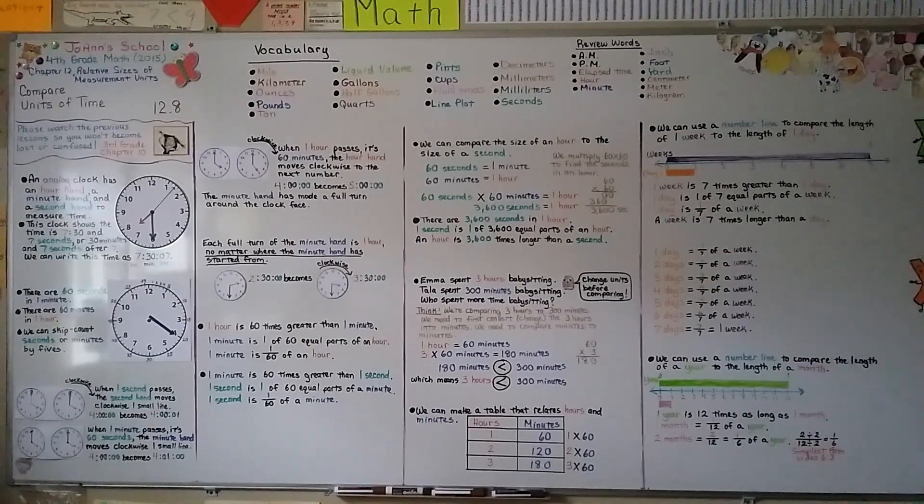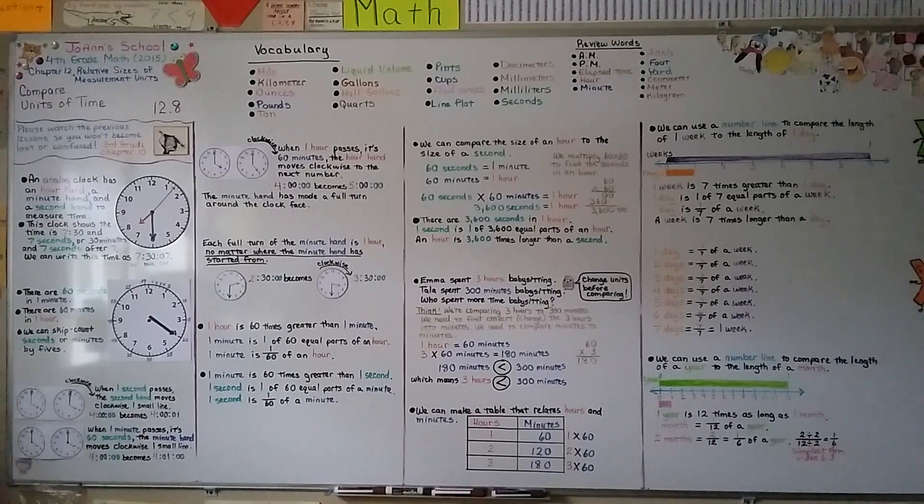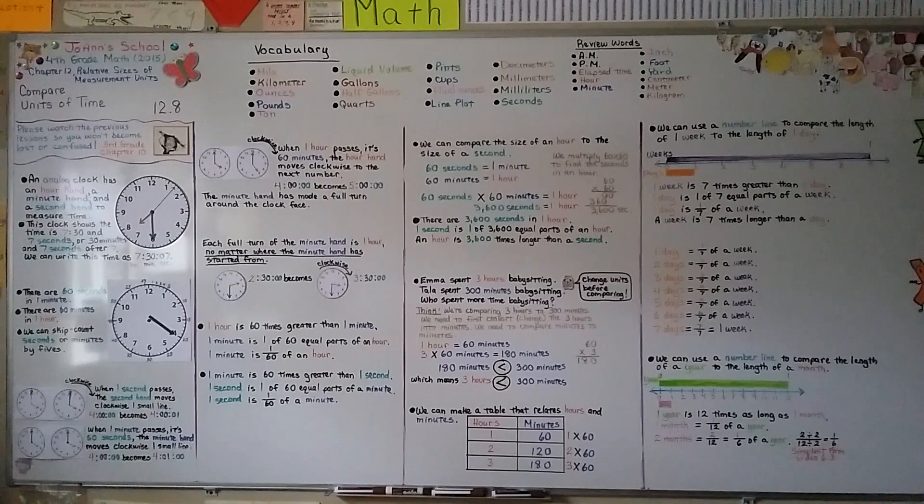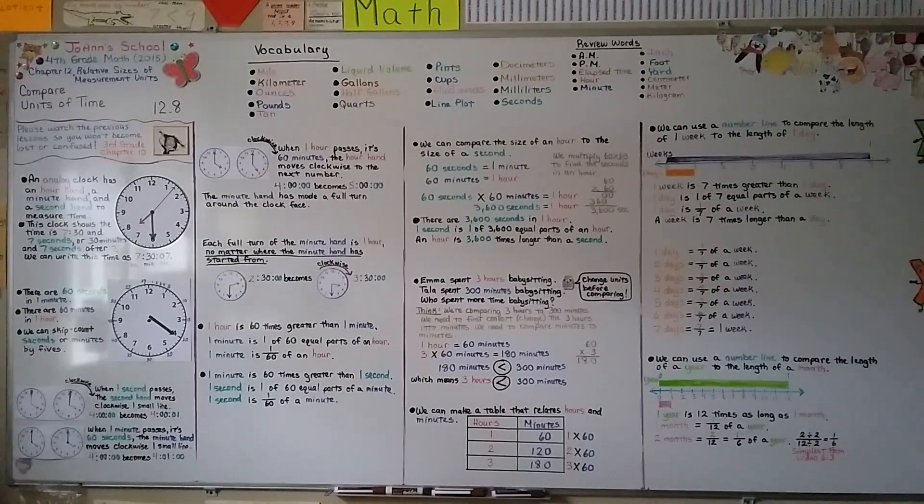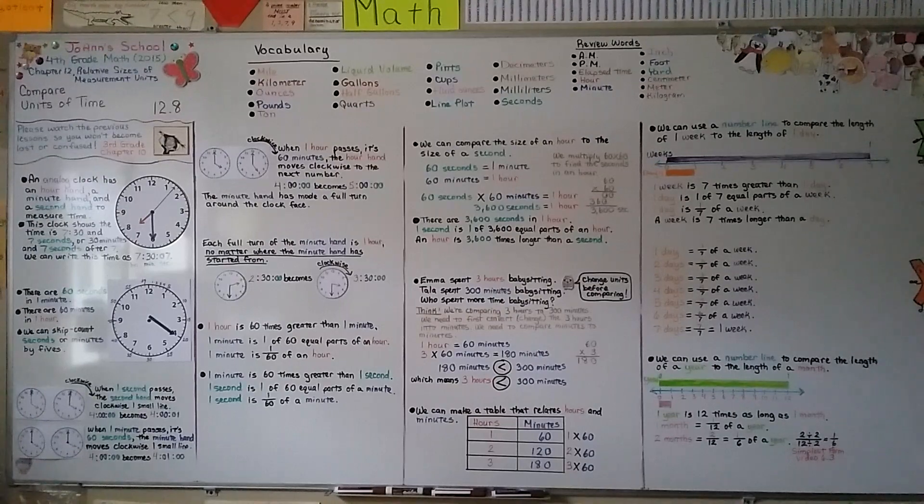So remember there's 60 seconds in a minute, 60 minutes in an hour, 24 hours in one day, 365 days in one year, 12 months in one year. And we're going to talk about problem solving with elapsed time and some strategies in our next lesson, 12.9.